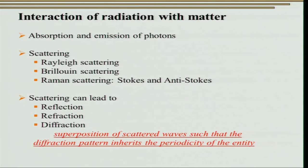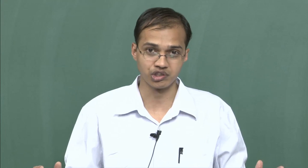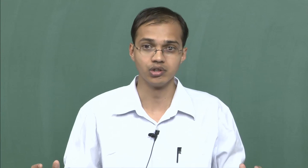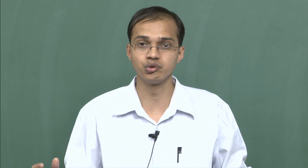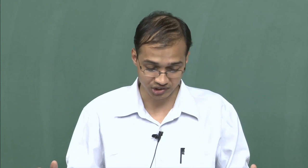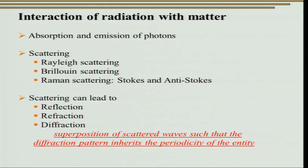Let us understand the interaction of radiation with matter. Whenever an electromagnetic radiation interacts with matter, it can lead to absorption as well as emission of photons, and also scattering. Scattering can be classified as Rayleigh scattering, where energy is conserved, Brillouin scattering for liquids, and Raman scattering. Scattering can also lead to reflection, refraction, and diffraction. The most important is diffraction, defined as superposition of scattered waves such that the diffraction pattern inherits the periodicity of the entity.